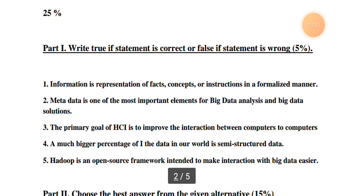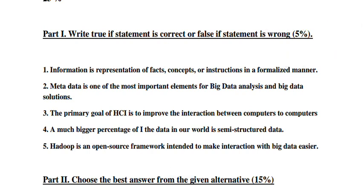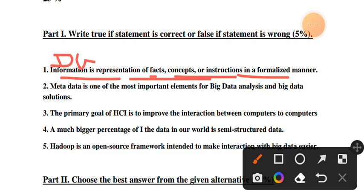For the exam, there are true or false questions. The first question: Information is a representation of facts, concepts, or instructions in a formalized manner. This is true. Information is the presentation of facts, concepts, or instructions in formalized manner. Data, on the other hand, is the raw presentation of facts, concepts, or instructions.